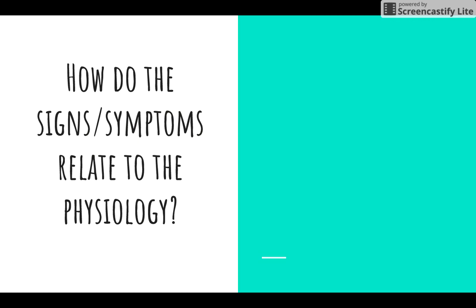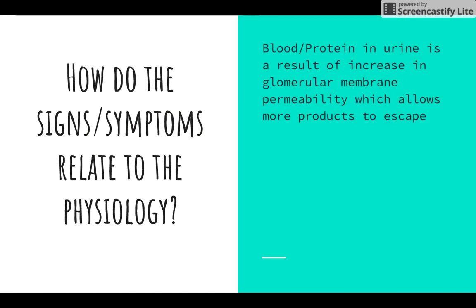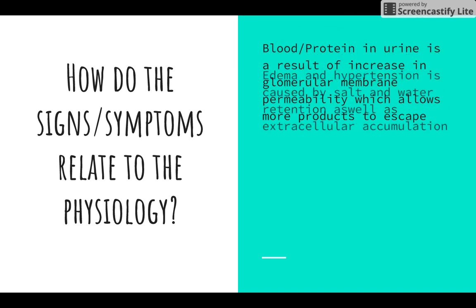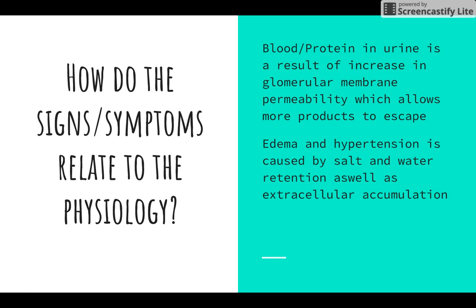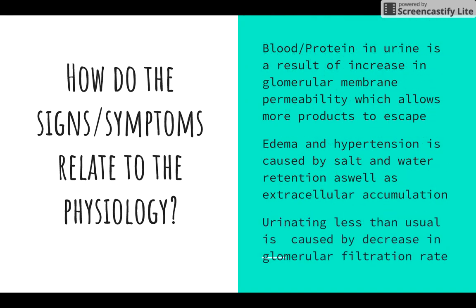How do the signs and symptoms relate to physiology? Blood and protein in the urine is a result of an increase in glomerular membrane permeability, which allows more products to escape. Edema and hypertension are caused by salt and water retention, as well as extracellular accumulation. Urinating less than usual is caused by a decrease in glomerular filtration rate. If left untreated, glomerulonephritis could lead to kidney failure.